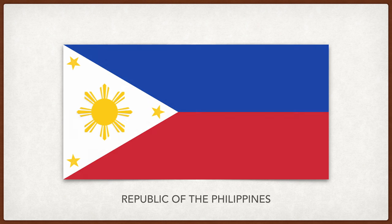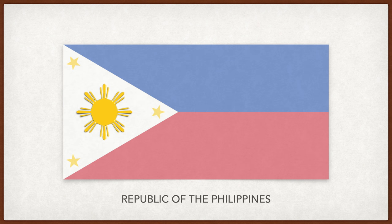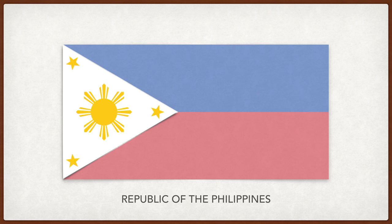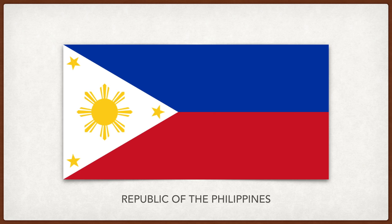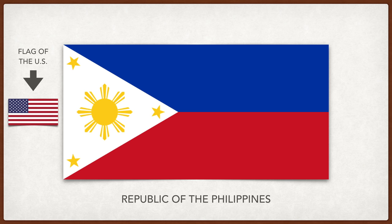The Philippines. The eight rays of the sun represent the eight provinces that first revolted against the Spanish government. The three stars represent the three island groups that make up the Philippines. The white triangle represents liberty, equality, and fraternity. The blue stripe represents peace, truth, and justice, and the red stripe represents patriotism and valor. The original meaning behind the colors was to pay tribute to the United States for its help in the Philippine revolution against Spanish rule.